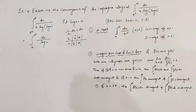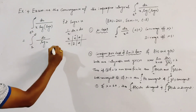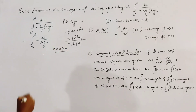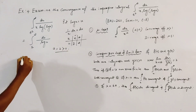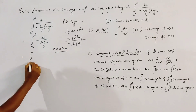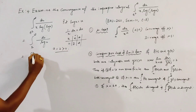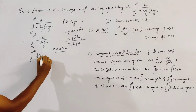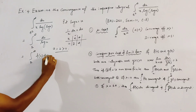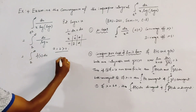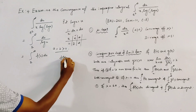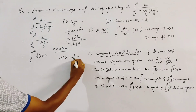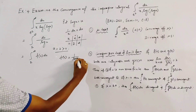The integration becomes the integral from 2 to infinity of du over log u. Here a = 2, which is greater than 0. We write this as the integral from 2 to infinity of f(u) du, where f(u) = 1 over log u.